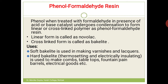Soft Bakelite is used for making varnishes and lacquers. Hard Bakelite is a thermosetting polymer, highly cross-linked, and water resistant. It is used to make combs, table tops like Formica, fountain pen barrels, electric goods, and gramophone records.